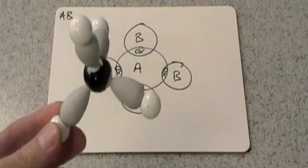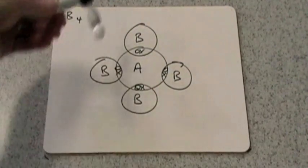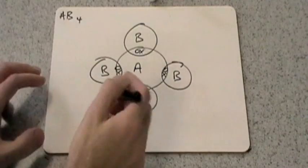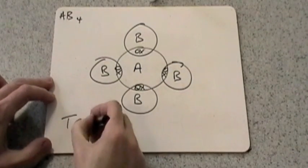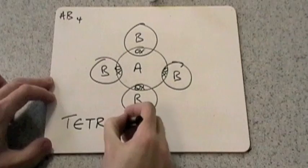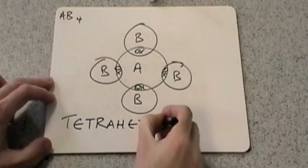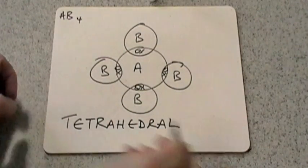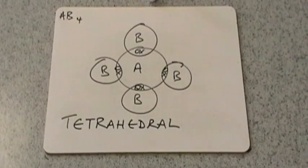The name of this shape is tetrahedral. So tetrahedral. So it's a tetrahedral shape.